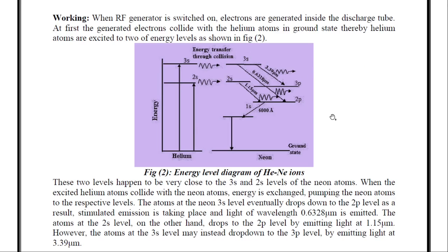By looking at this energy level diagram, we can see that this is a four-level laser. That means, 3s and 2s are the excited states. 3p and 2p are the another excited states. There are four energy levels. Therefore, we can say it is a four-level laser.